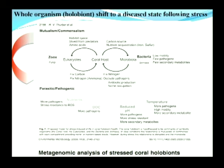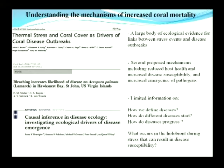The coral holobiont model was proposed in 2001 by Forrest Rower and colleagues. In 2009, Becky Vega-Thurber and colleagues proposed an extension of this model whereby the coral holobiont symbiosis, under various stress events, shifts from a symbiotic or mutualistic interaction to a pathogenic or parasitic interaction.